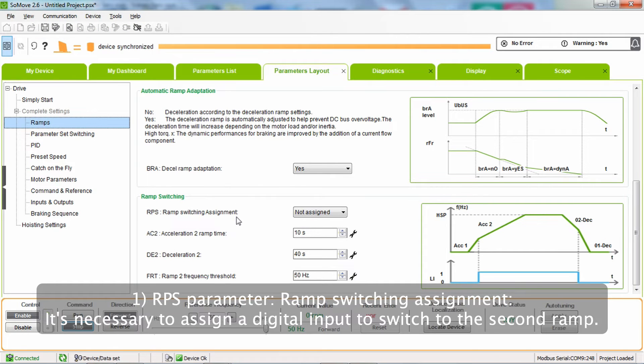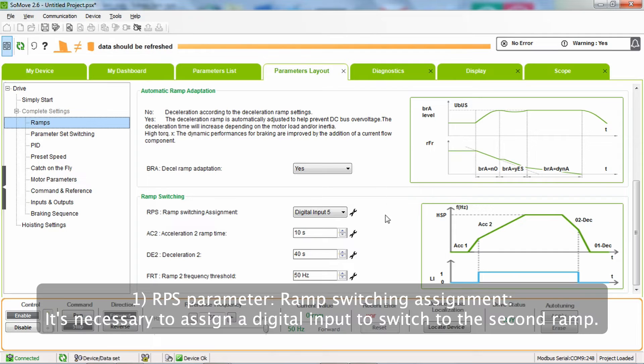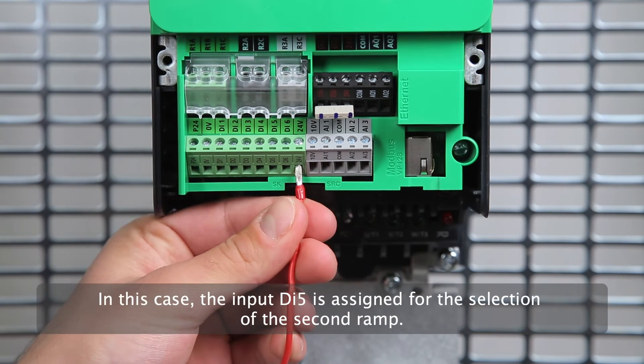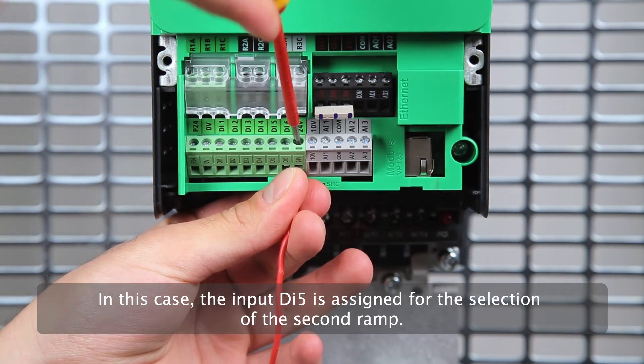Number 1: RPS parameter, ramp switching assignment. It's necessary to assign an input DI to switch to the second ramp. In this case, the input DI5 is assigned for the selection of the second ramp.